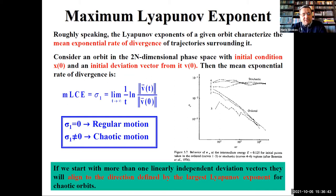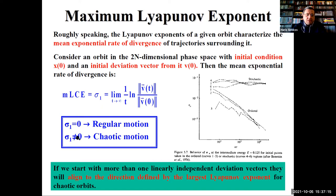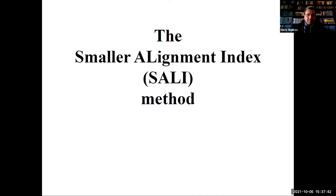As everybody knows, we can compute the maximum Lyapunov exponent as a limit — numerically, the limit as t goes to infinity of the logarithm of how much the length of the small deviation vector is increasing in time, divided by t. If we have regular motion, this goes to zero; if we have chaotic motion, this number will be positive. Numerically, if you start with any random initial deviation vector, eventually you will always be able to find the largest Lyapunov exponent. This is a key point for computing the SALI, as we will see in a moment.